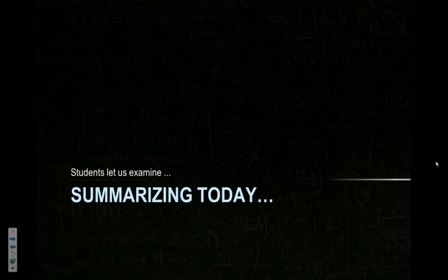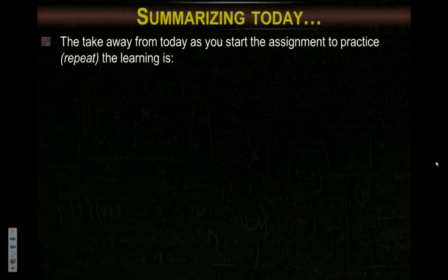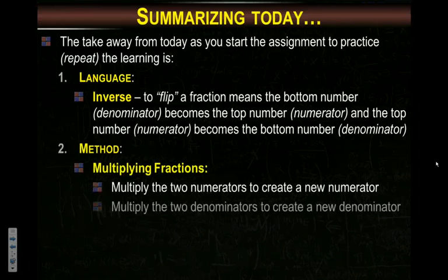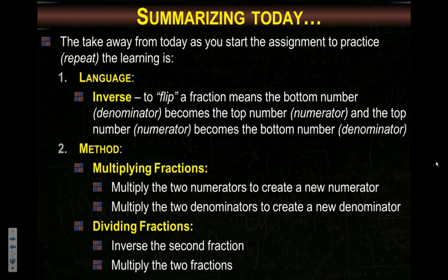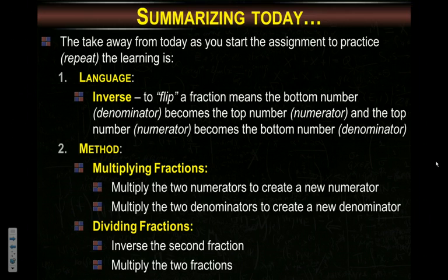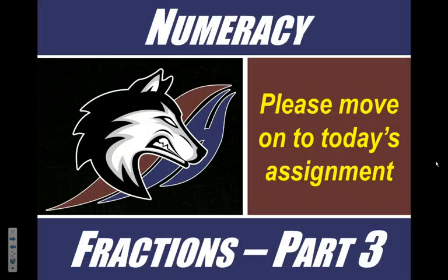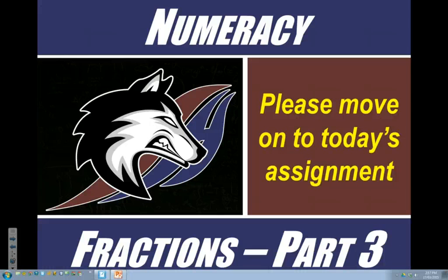That's it. Let's summarize. So all I want you to get out of today is the following method. In terms of language, there's only one new word you need to know for this part, and that is that idea to inverse or flip a fraction. That's what it means. Your method is to multiply the two numerators, multiply the two denominators when doing multiplication. When doing division, inverse the second fraction, or flip it, and then multiply the two fractions. And if you don't know how to multiply, just look right here. So it's a very simple set of steps for dealing with that. Is there any questions about this?